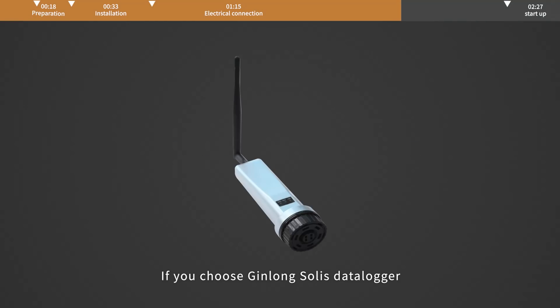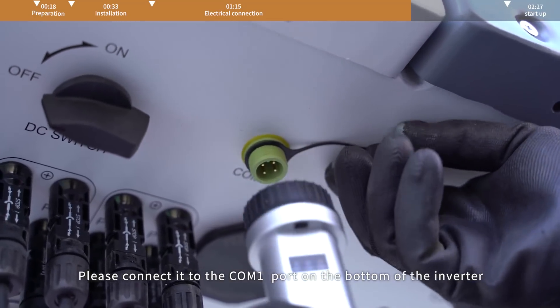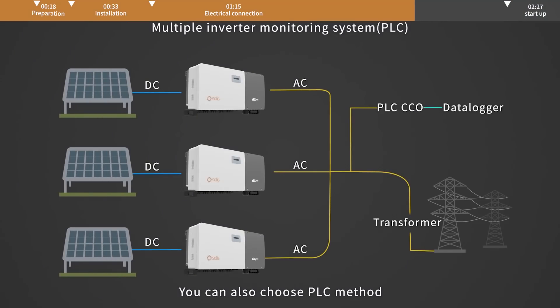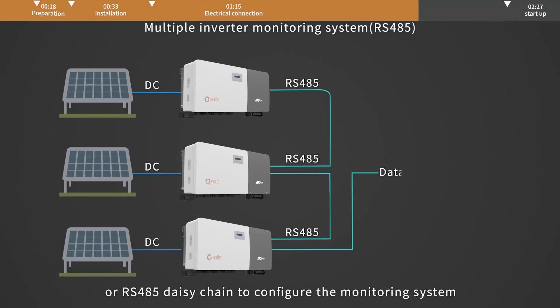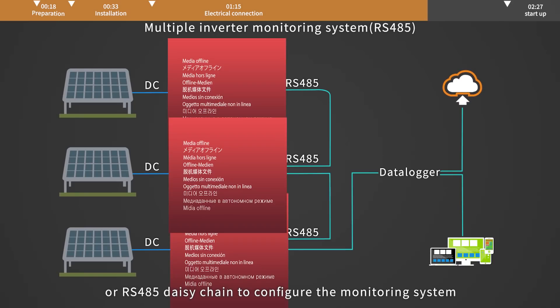Communication connection. If you choose Jin Long Solis Data Logger, please connect it to the COM1 port on the bottom of the inverter. You can also choose PLC method or RS-485 daisy chain to configure the monitoring system.